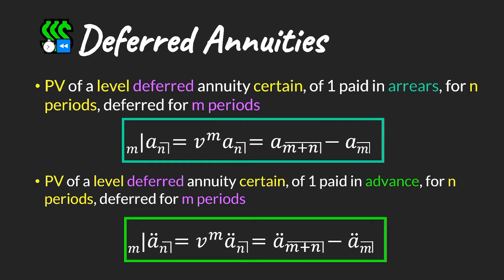More formally, we have two formulas: for payments made in arrears and for payments made in advance. There are two different but equivalent ways of expressing the same value — either discounting an annuity or subtracting two annuities — to calculate the cash flows paid after the deferment period.